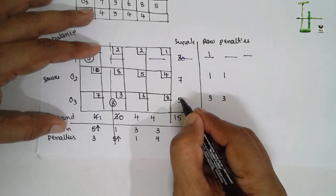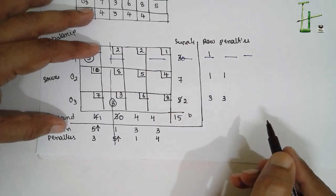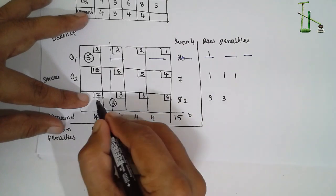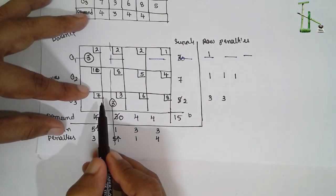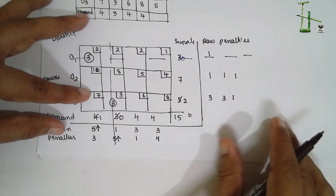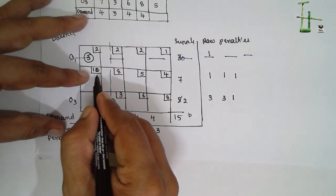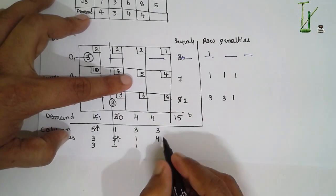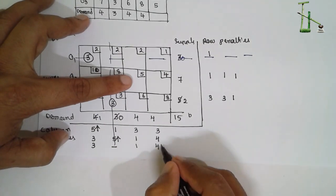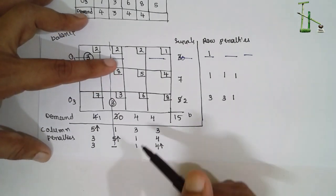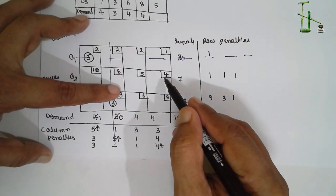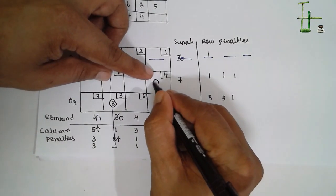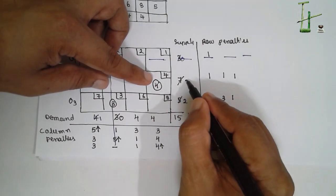Remaining supply becomes 5 minus 3 = 2. Next iteration: 10, 5 minus 4 = 1. Row penalty: 6 is smallest, 7 is next, so 7 minus 6 = 1. Column penalty: 10 minus 7 = 3; this column is eliminated; 6 minus 5 = 1; penalty = 4. The largest penalty is 4 — show the arrow here. Move upward and select the smallest value, which is 4. Supply is 7, demand is 4, so write 4 and deduct: 7 minus 4 = 3 remaining. Eliminate this column.